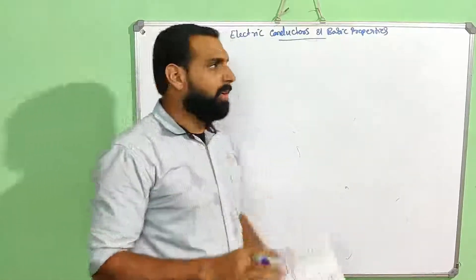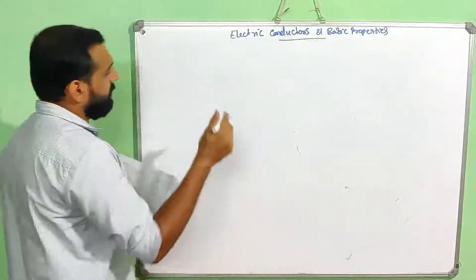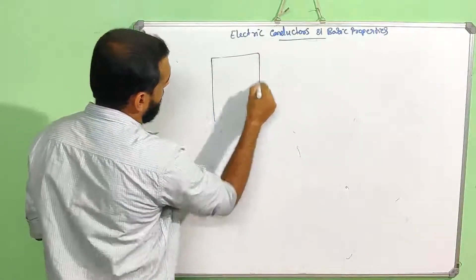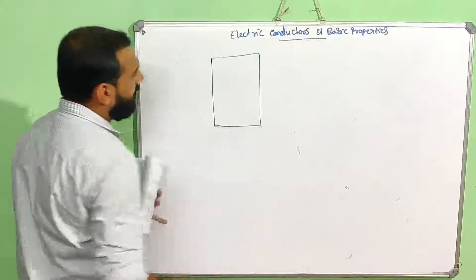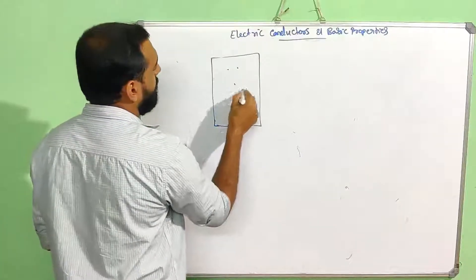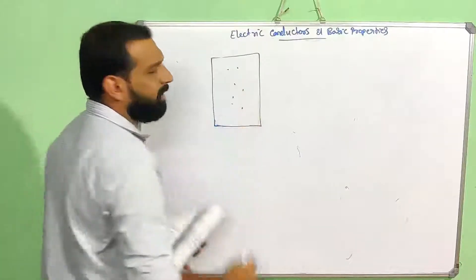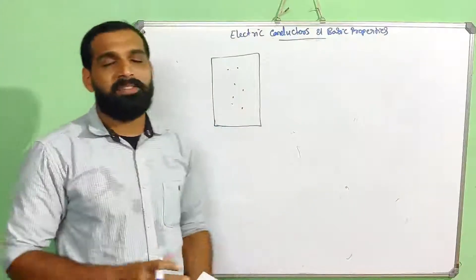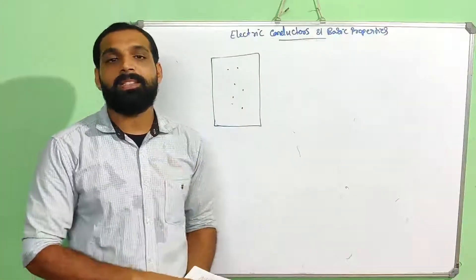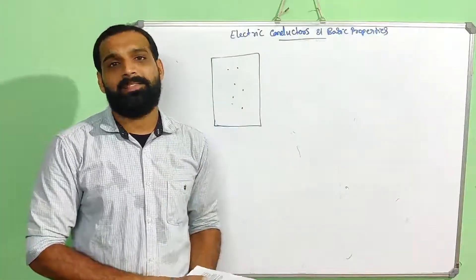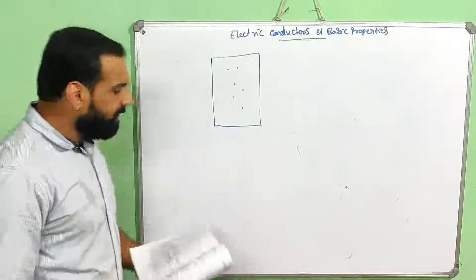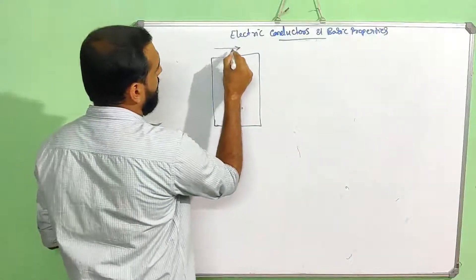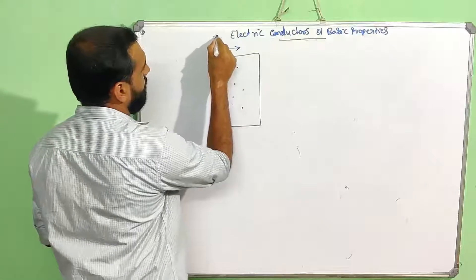In this case, there are free electrons in the conductor. For example, consider a conductor with free electrons. We are applying an external electric field E to this conductor.